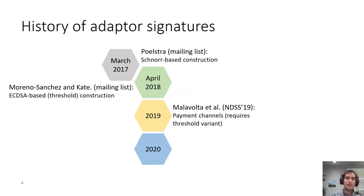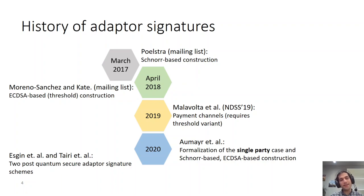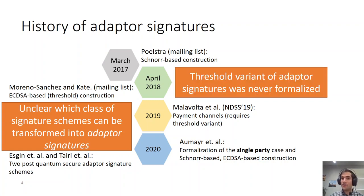It was first in 2020 that Aumayr et al. for the first time proposed the formalization of a single-party adapter signature scheme and provided constructions based on Schnorr and ECDSA signatures. Later that year, Ezgin et al. and Tahiri et al. proposed two different post-quantum secure adapter signatures from different underlying assumptions. However, until this point, it was unclear from which class of signature schemes one can design adapter signatures. The constructions seemed a little bit ad hoc, and it wasn't clear if there is an inherent property that can be used from signatures to transform them into adapter signatures. Furthermore, the threshold variant of adapter signatures was never formalized until this point.